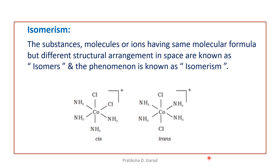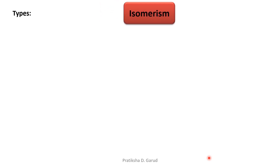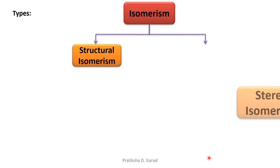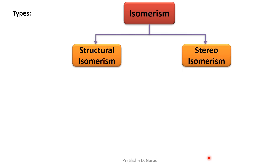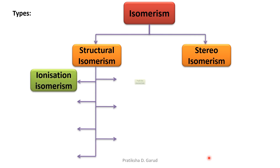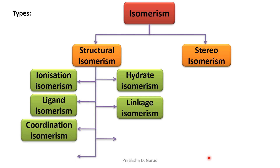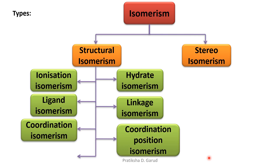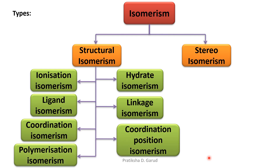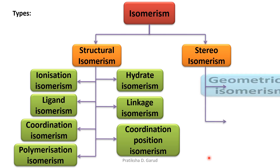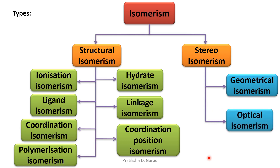Now let us see the types of isomerism. Isomerism is divided into two types: the first is structural isomerism and the second is stereoisomerism. Structural isomerism is further divided into seven types: ionization isomerism, hydrate isomerism, ligand isomerism, linkage isomerism, coordination isomerism, coordination position isomerism, and polymerization isomerism. Stereoisomerism has two types: geometrical isomerism and optical isomerism.